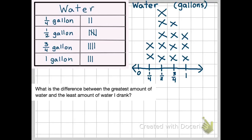My first question says, what is the difference between the greatest amount of water and the least amount of water I drink? So there's a key word in there, which is difference. We know difference means subtraction. So I'm going to be subtracting something. And the things I'm going to be subtracting are the greatest amount of water I drank, and the least amount of water I drank.